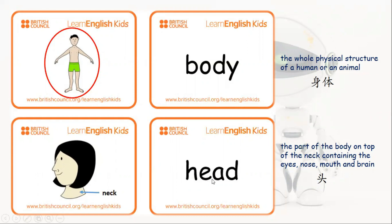Head. Head is the part of the body on top of the neck, containing the eyes, nose, mouth and brain. 头。头就是我们的颈部、颈项以上的这个部分，包括眼睛、鼻子、嘴巴，还有我们的脑部、头脑。